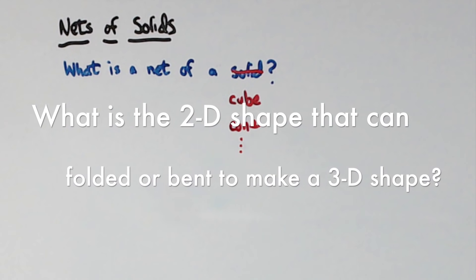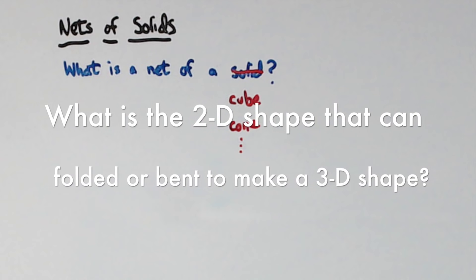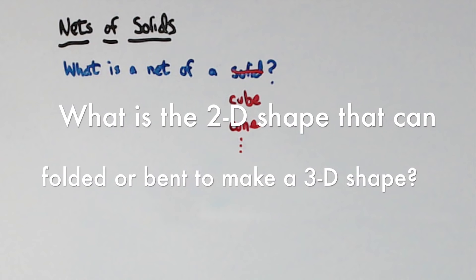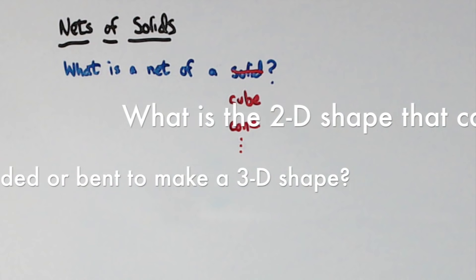What this question means is, what is the 2D shape that can be folded or bent to make a particular 3D shape?